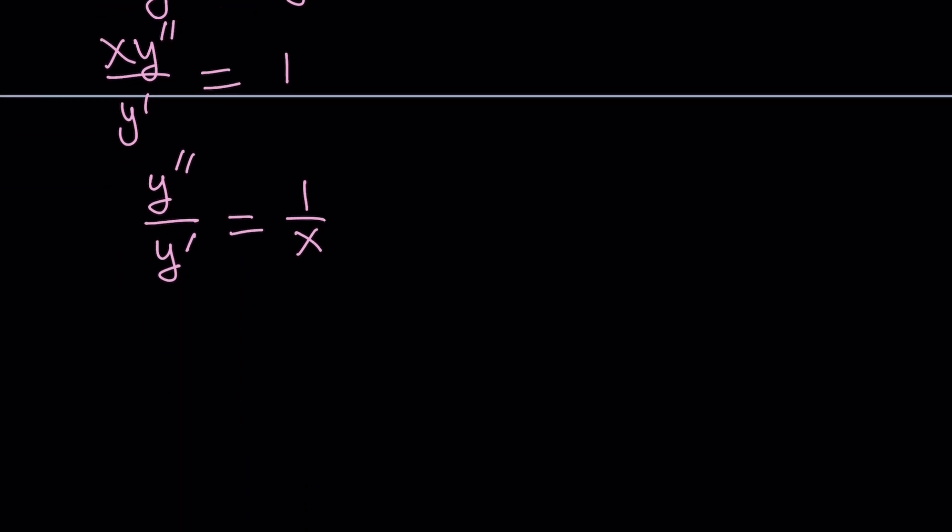This form is important because notice that we have a fraction and in the numerator, we have the derivative of the denominator. In other words, if I set y prime equal to u, then y double prime by differentiation is going to be u prime. So, we basically have u prime divided by u equals 1 over x.